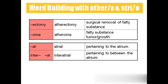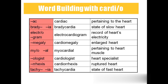Atrial — related to or pertaining to the atrium. Interatrial — in between the atria. Cardiac — pertaining to the heart. Bradycardia — a state of slow heartbeat. Electrocardiogram — recording the heart's electricity. Cardiomegaly — enlargement of the heart. Myocardial — pertaining to the heart muscle. Cardiologist — heart specialist. Cardiorexis — ruptured heart. Tachycardia — a state of fast heartbeat.